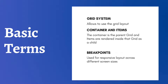Now let's cover some basic terminologies. First, about the grid system: it allows us to use the grid layout available in Material UI. The Material UI grid allows us to use a grid layout on a web page using rows and columns, which we can define as per our requirement. The grid has two parts: the container and the item. The container is the parent grid of all child grids.